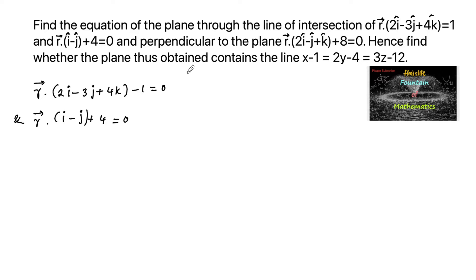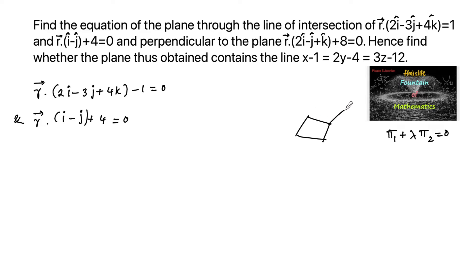The plane passing through the line of intersection means it is a family of planes. We can represent it as π1 + λπ2 = 0, representing the family of planes passing through the line of intersection of two planes. Through the line of intersection, there are infinitely many planes that can be drawn.